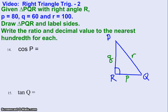So they tell us that small p is 80, small q is 60, and small r is 100. So that is drawing and labeling the sides. Then it says to write the ratio, which would be the fraction, and the decimal value to the nearest hundredth for each.